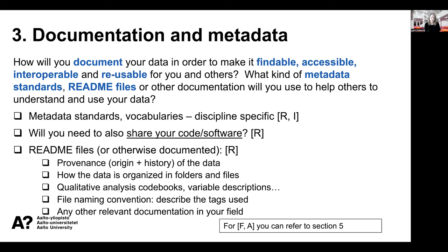Section three concerns documentation and metadata. This question introduces the FAIR principles — the idea that data should be Findable, Accessible, Interoperable, and Reusable for you as well as others. Here you can mostly cover data-level metadata, which describes the structure and content of the data itself. Metadata can also refer to bibliographic or discovery metadata — things like title, author, and description — but that is better covered in section five, which is about publishing and archiving. To avoid overlap, stick here to data-level metadata, focusing on the interoperable and reusable aspects of the FAIR principles.